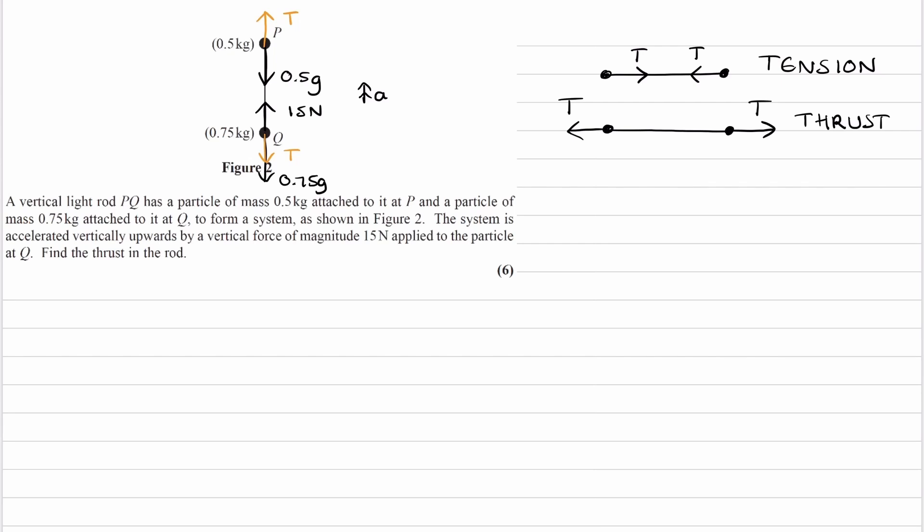Now that we have our force diagram, we can work out what T is. There are a few ways to do this. We can consider P and Q separately, or consider the whole object as one system. I'll first consider P and Q separately. For P, it experiences two forces: tension going upward and weight going downward. T minus 0.5g would be the overall upward force. This equals mass times acceleration, as this is the resultant force: 0.5A.